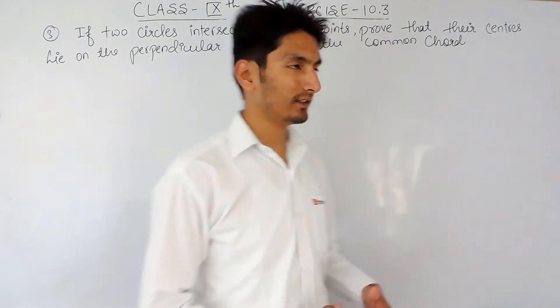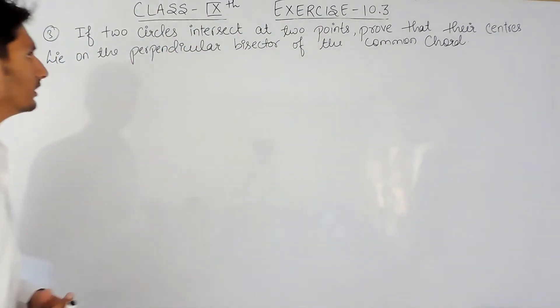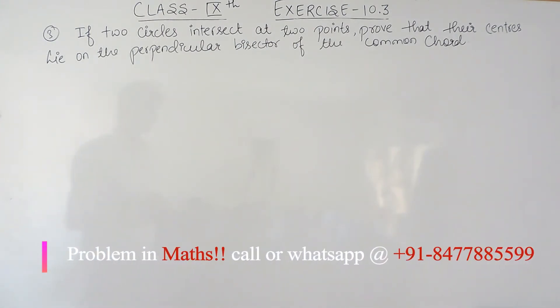Hello everyone, in this video we are going to solve the third question of exercise 10.3. The question says: if two circles intersect at two points, prove that their centers lie on the perpendicular bisector of the common chord.